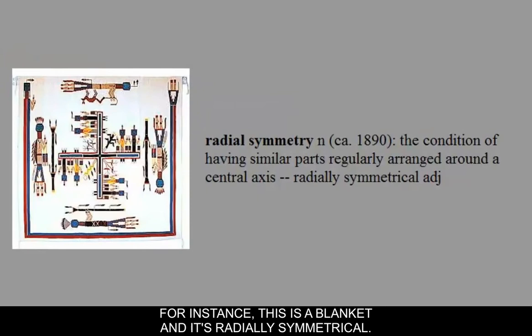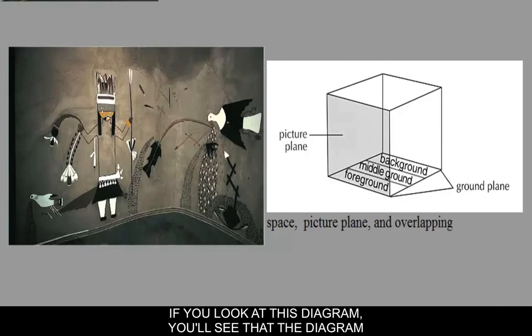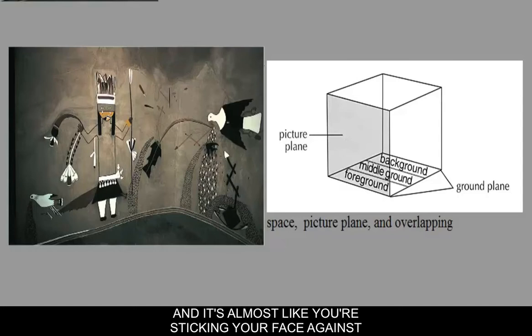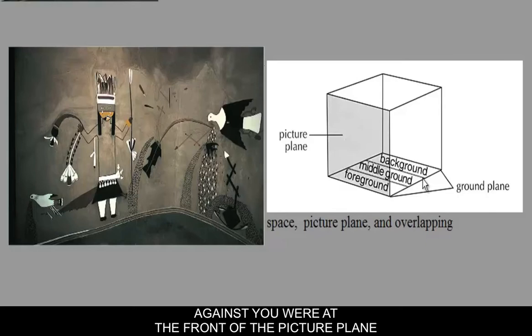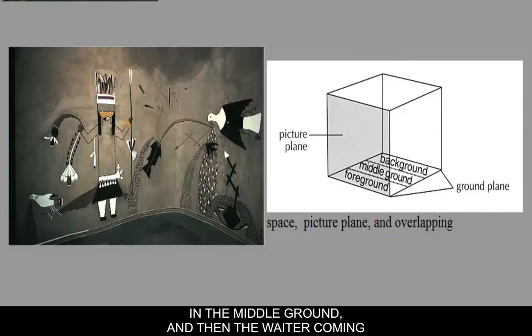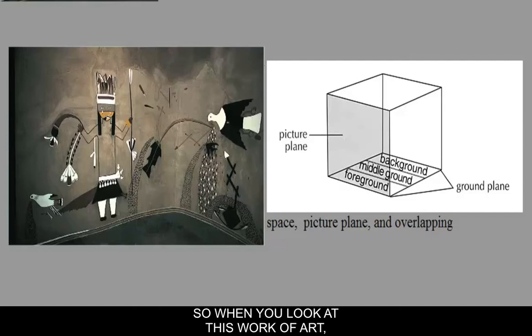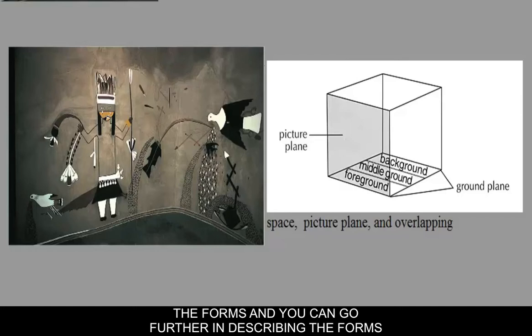In terms of the picture plane, there isn't a lot of space being created by overlapping. There's a foreground, a middle ground, and a background — it's almost like pressing your face against a window. In this painting, there is only a foreground; there's no creation of space. One way to create space is to make shapes smaller as you move away, changing size and scale. This work is primarily flat, doesn't have a lot of depth or shading — it's a diagrammatic piece that just describes the forms, and you can identify them because they're cartoons of things.